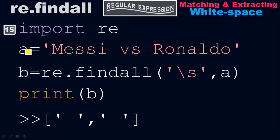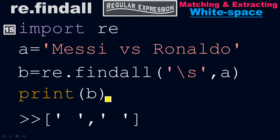Note that last time we used x and y as variables; this time I'm using a and b. You can use any variable name — a, x, c, d — whatever you want. So a equals to 'Messi vs Ronaldo' and b equals to the regular expression. Then print(b) will return the matching result as output.